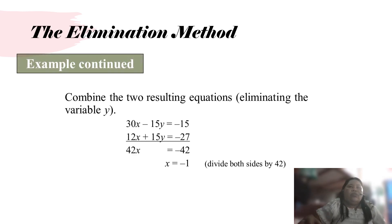So let's continue our example. Combine the two resulting equations by eliminating the y. So we have 30x plus 12x is 42x, and negative 15y plus 15y cancel. Negative 15 plus negative 27 is negative 42. So divide both sides by 42. The answer is the value of x is negative 1.